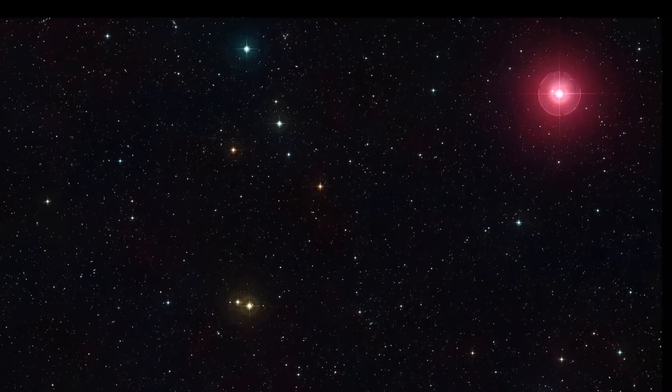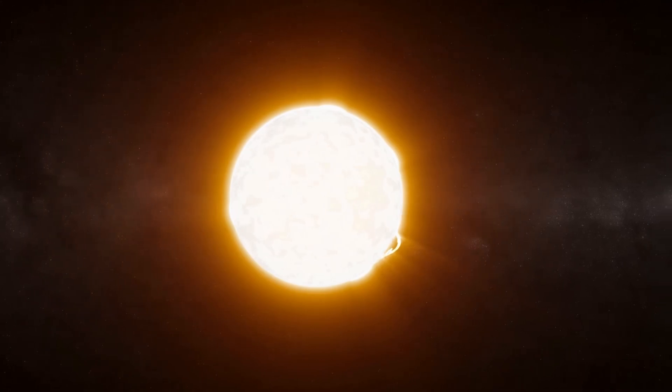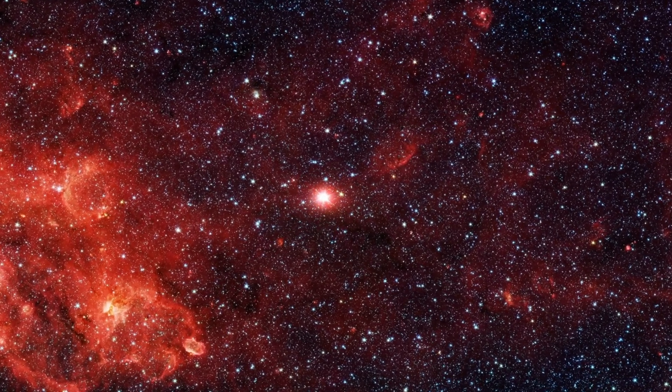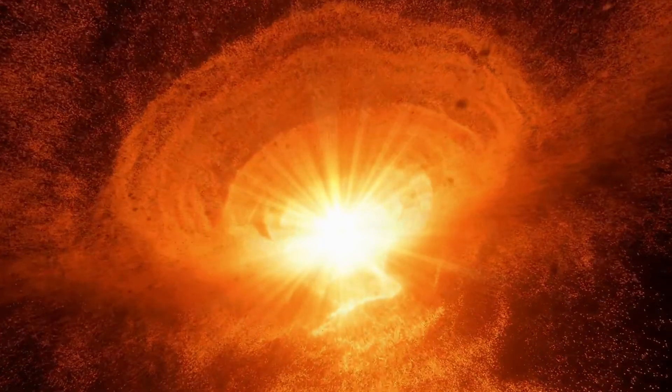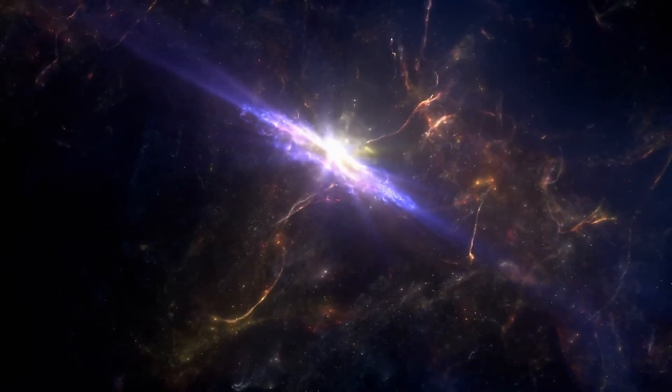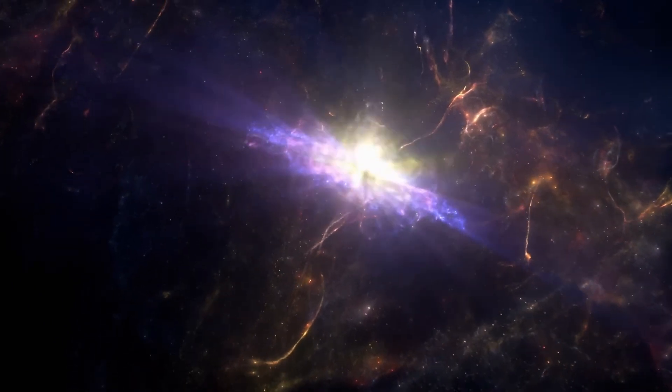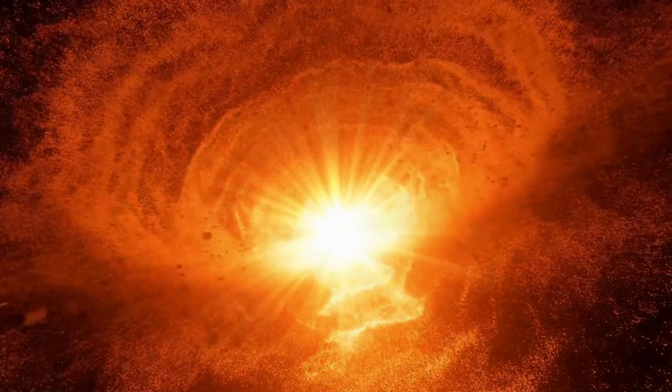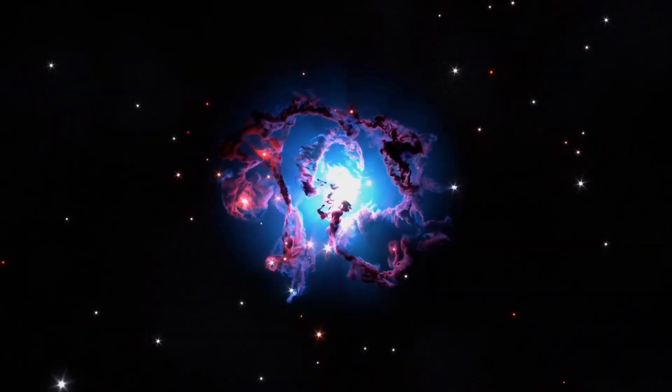Imagine a cosmic spectacle on a scale so massive, it's akin to a volcanic eruption on a star-sized stage. Deep within Betelgeuse, something extraordinary happened. Material erupted from the star's core, surging outward and creating shockwaves within its atmospheric layers. This ejected material transformed into molecules and dust, cloaking the star in a cosmic veil, making it appear dimmer to our earthly eyes.